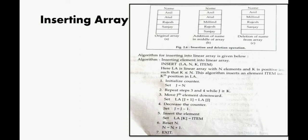Let's see the algorithm. In starting, initialize counter: set J equal to N. N is the total number of elements. You have to insert the element after N, so N means you have to put the number from where you have to insert. Move the jth element downward - before Rajesh was there, so you want to move Rajesh downward so that the place will be free and Milind will come there. For this case, LA[J+1].